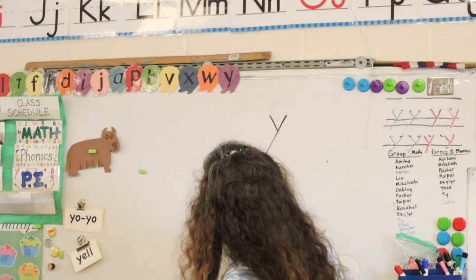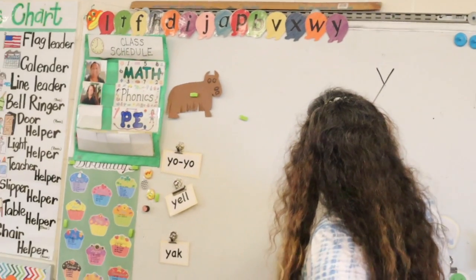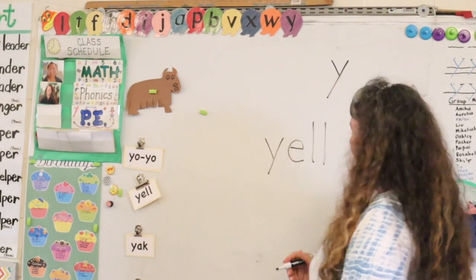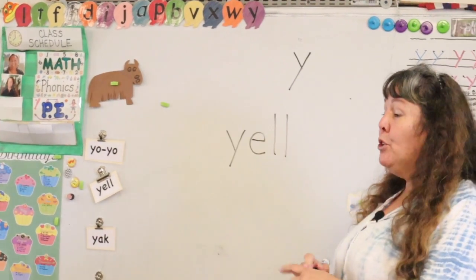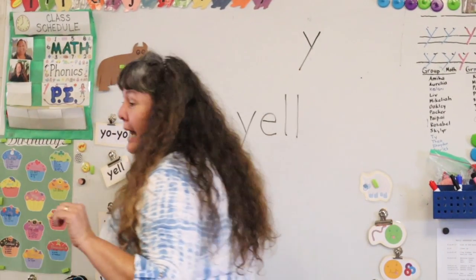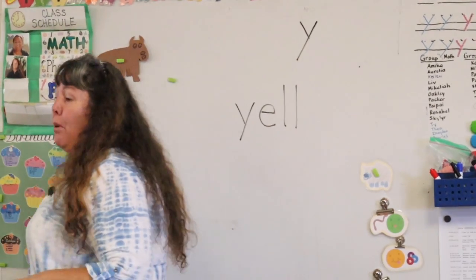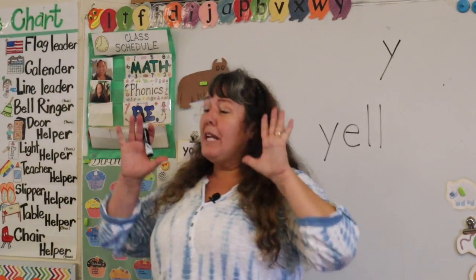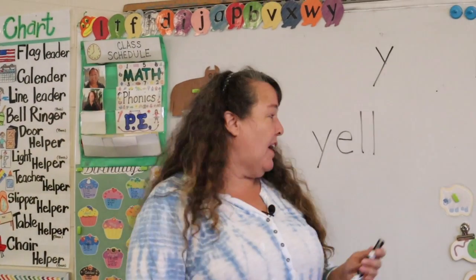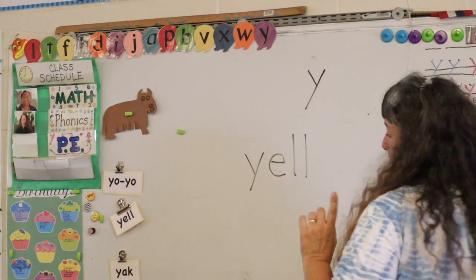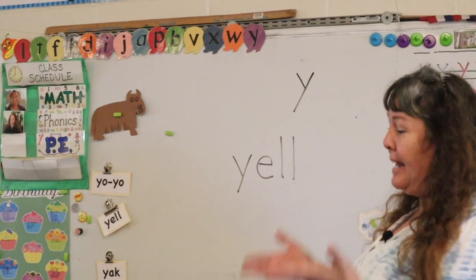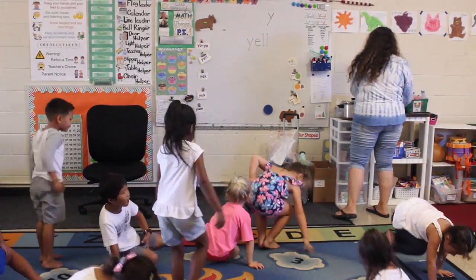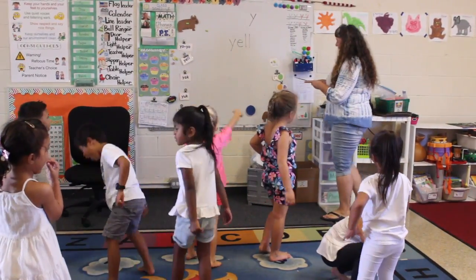I'm going to write the word yell on the board because we're going to sing a song where you can actually yell. Everyone say Y — Y. E — E. L — L. You have permission to yell in the classroom on the one part of the song where we say it out loud. Just that part. The other time you cannot yell in the classroom. So stand up and we are going to yell out that one part.